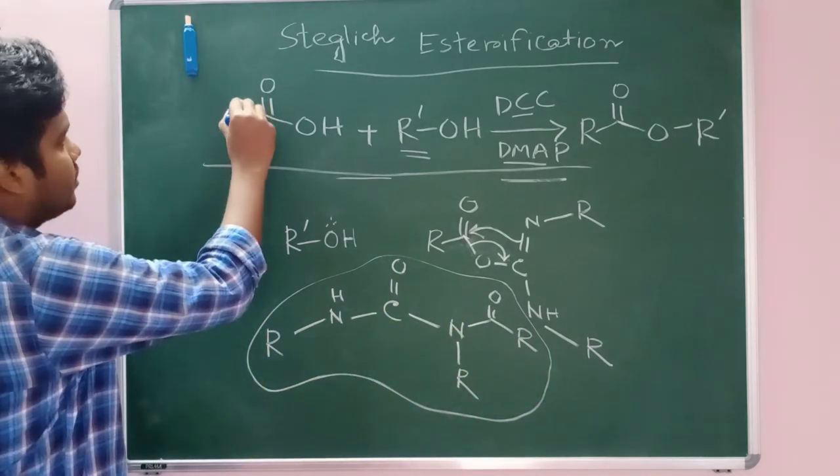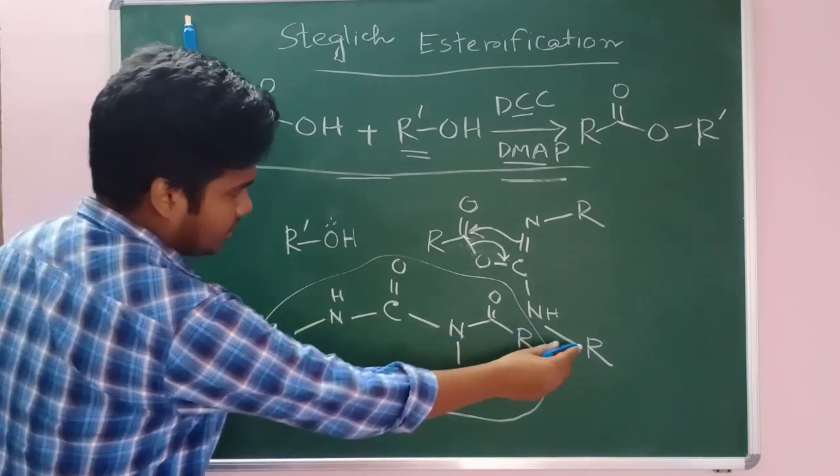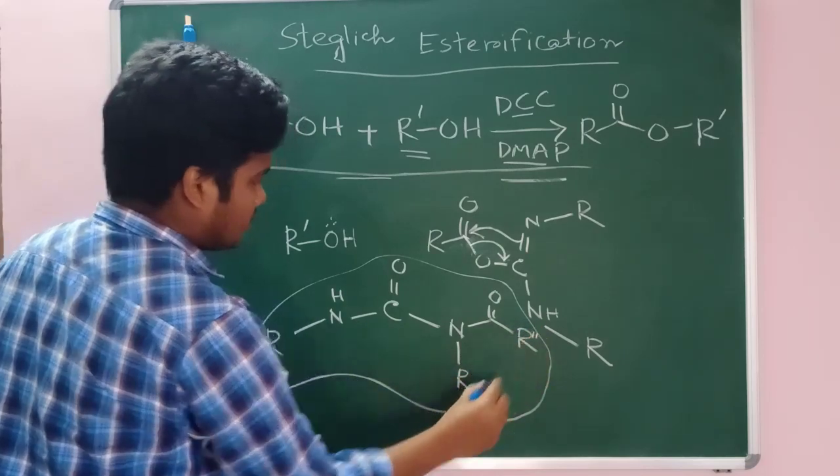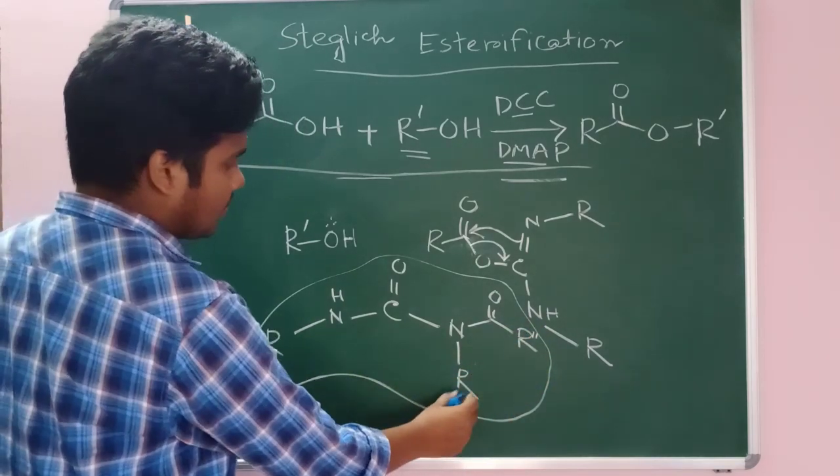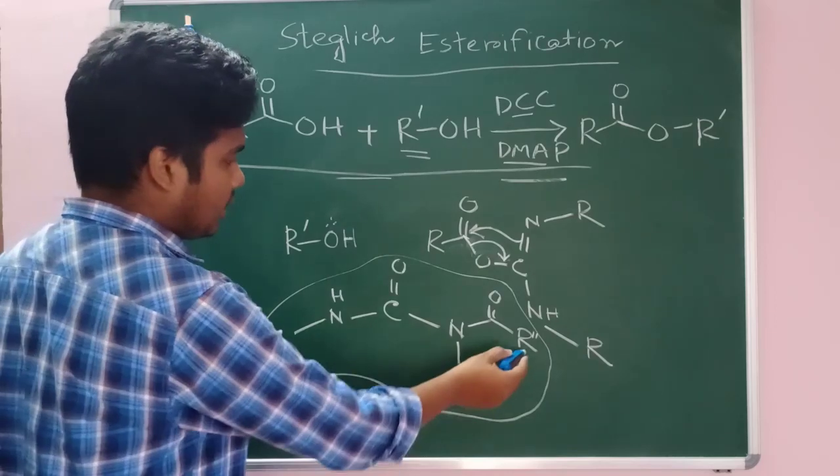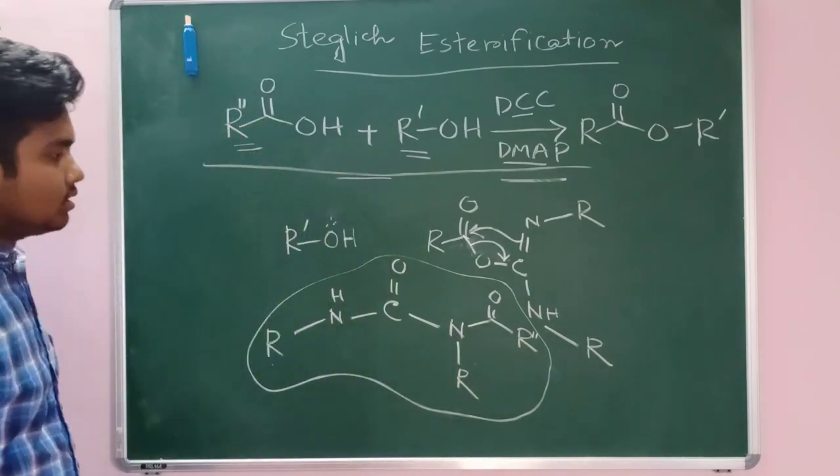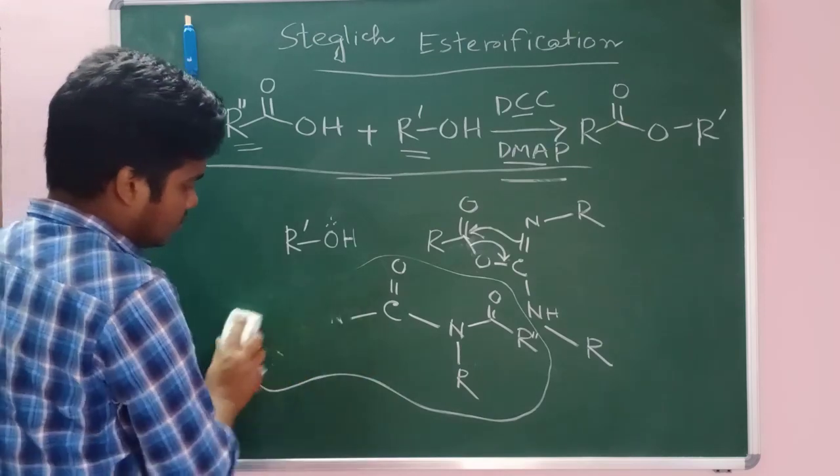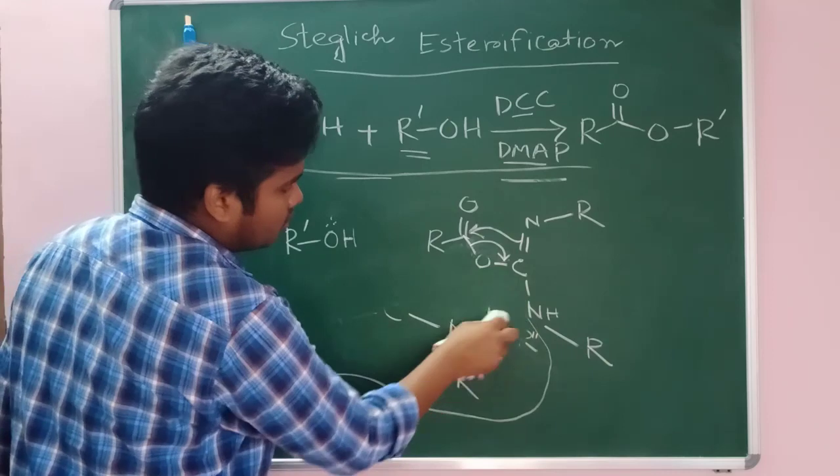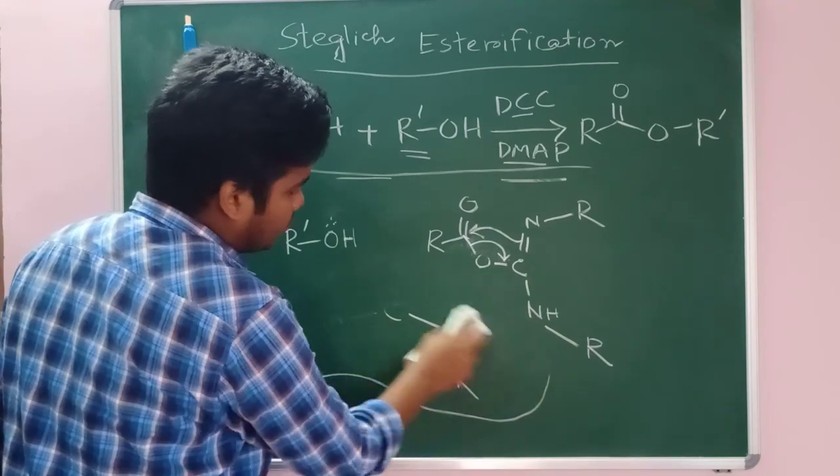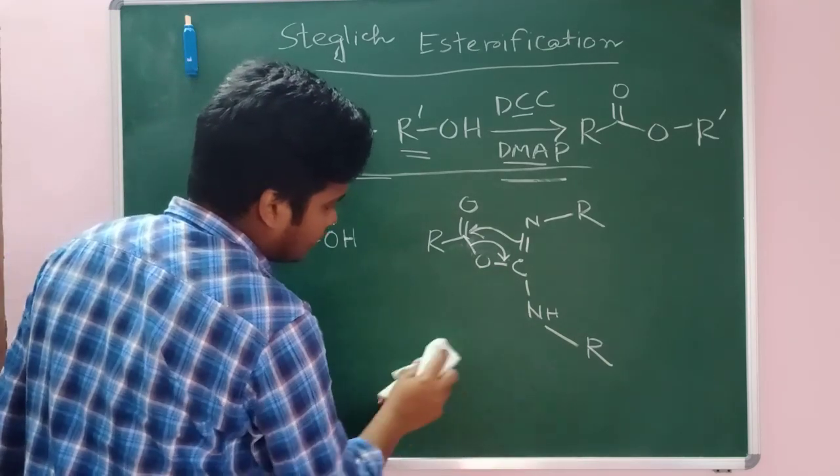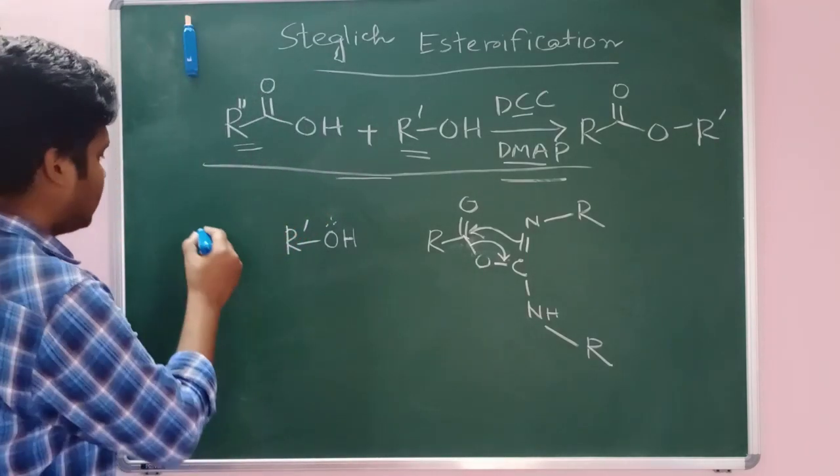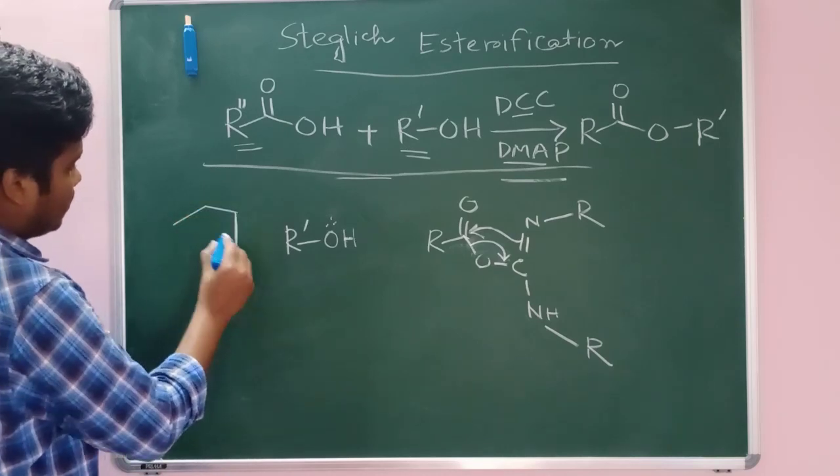Now let me write here double dash because there I have written already R so it will be double dash. Now it will be clear for you that these two are from the cyclohexyl, and this R dash from this acid. But to suppress the side reaction, we have to introduce another reagent that can stop the side reaction and that role will be done by this DMAP.